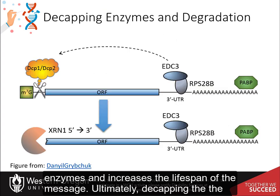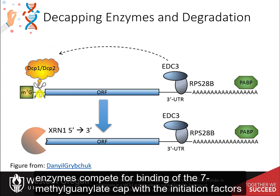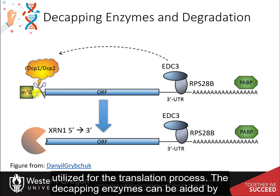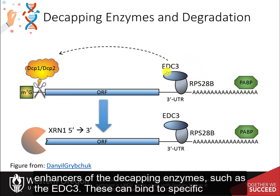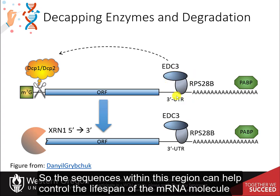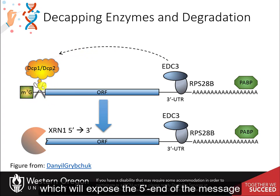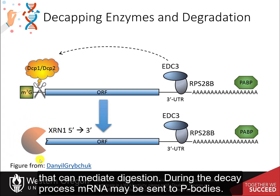Ultimately, the decapping of the seven-methylguanosine RNA is catalyzed by the decapping enzymes DCP1 and DCP2. These enzymes compete for binding of the seven-methylguanosine cap with the initiation factors utilized for the translation process. The decapping enzymes can be aided by enhancers of the decapping enzymes, such as EDC3, which can bind to specific regions or sequences in the untranslated portion of the messenger RNA. These sequences can help control the lifespan of the messenger RNA molecule by aiding in decapping, which will expose the five prime end of the message to endonucleases that can mediate digestion.